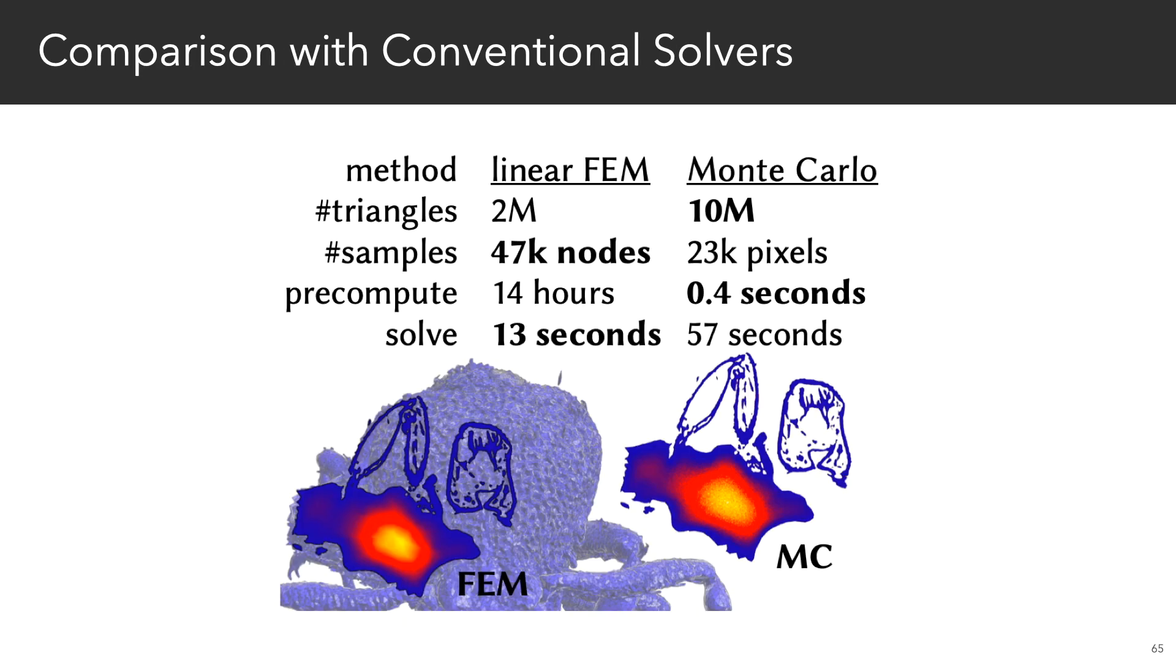In general though, it's difficult to do an apples-to-apples comparison between FEM and Monte Carlo because they have very different characteristics. In this example, for instance, FEM performs a solve fairly quickly once you have a mesh. Monte Carlo, though, takes more integration time, but provides better spatial resolution with far less precomputation.